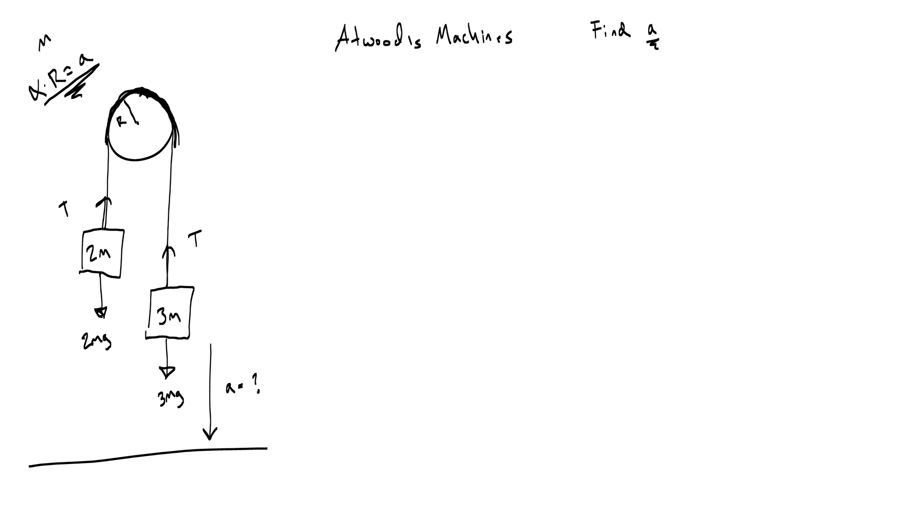And what we need to do is we need to take note of the fact that both of these tensions are pulling down on the pulley. And the left side is going to be different than the right side, so we call those t1 and t2.